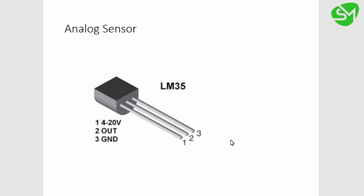The second type is analog sensor. A very good example of an analog sensor is the LM35 temperature sensor. It also has three pins: VCC, ground, and output. The output pin gives a varying voltage depending on the supply. If you supply five volts to VCC, the output signal will vary from zero volts to five volts. This varying signal is called an analog signal, and the analog output depends on the temperature of the environment.